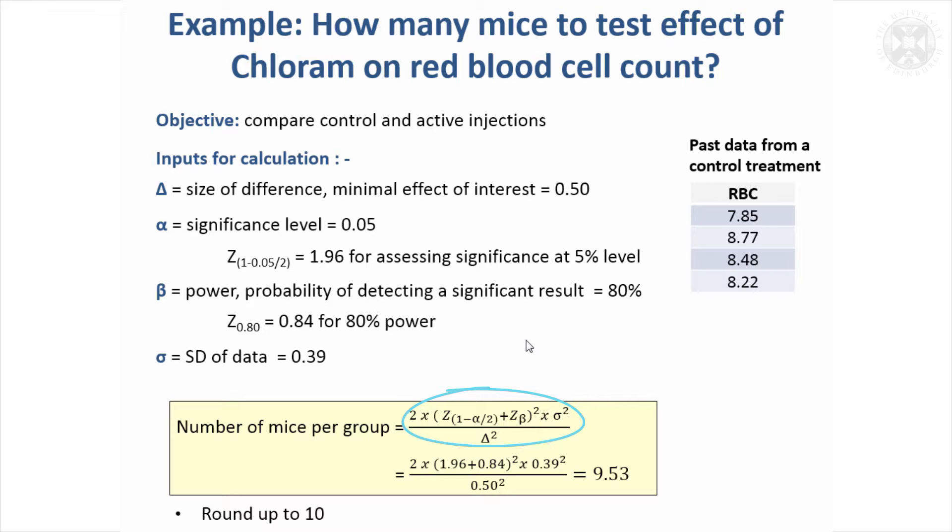plug all those numbers in—it's quite a simple thing to do in Excel—and we come out with 9.53. That gives the number of animals we need per group, and it's always good practice to round that up, so that means we need 10 animals, 10 mice in each of those groups.